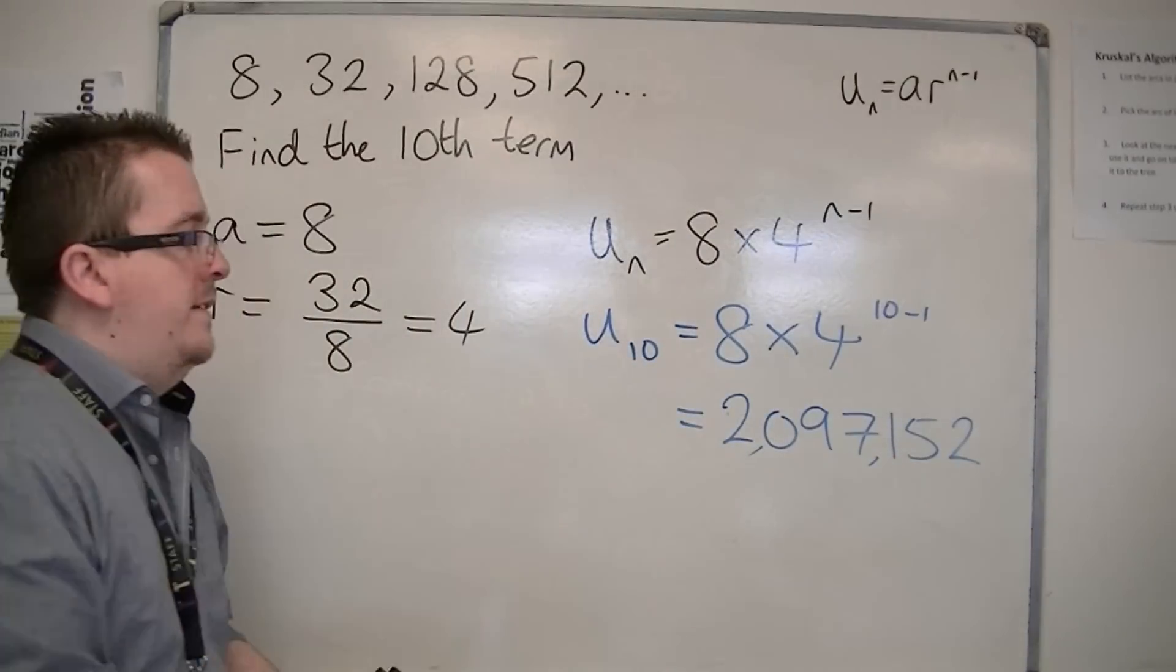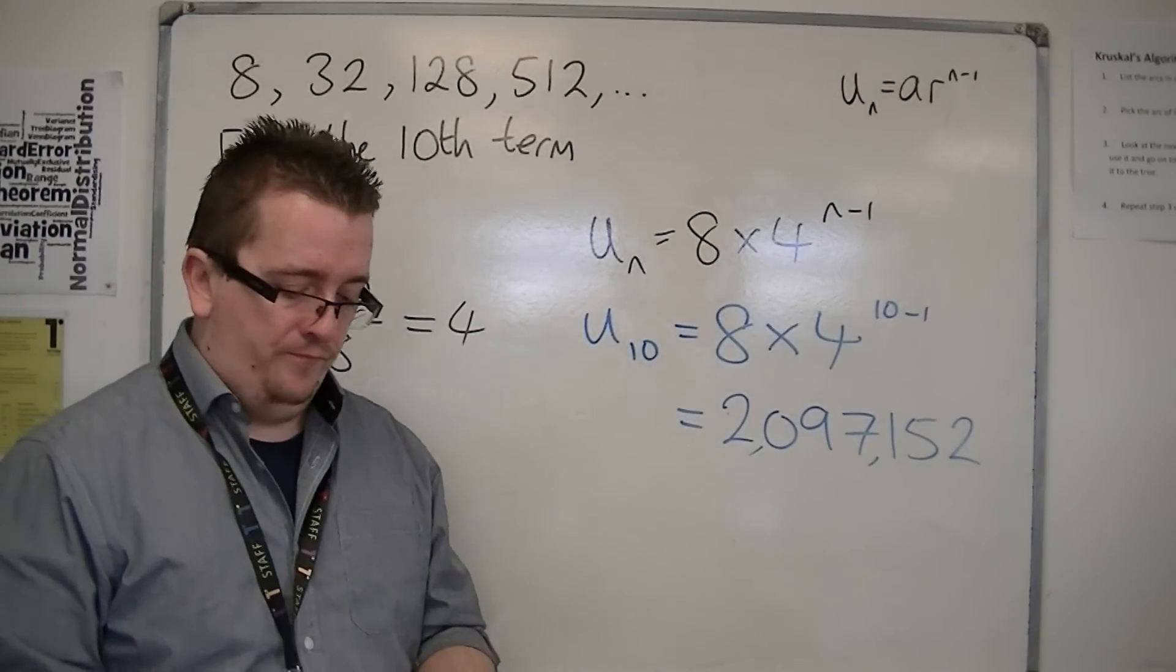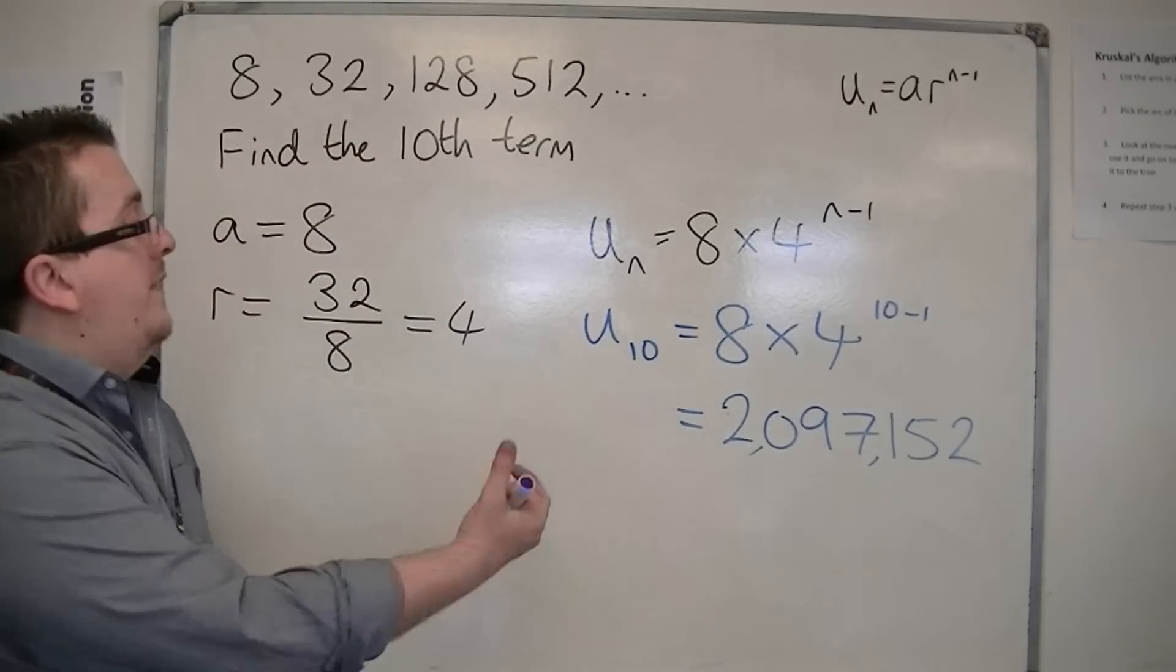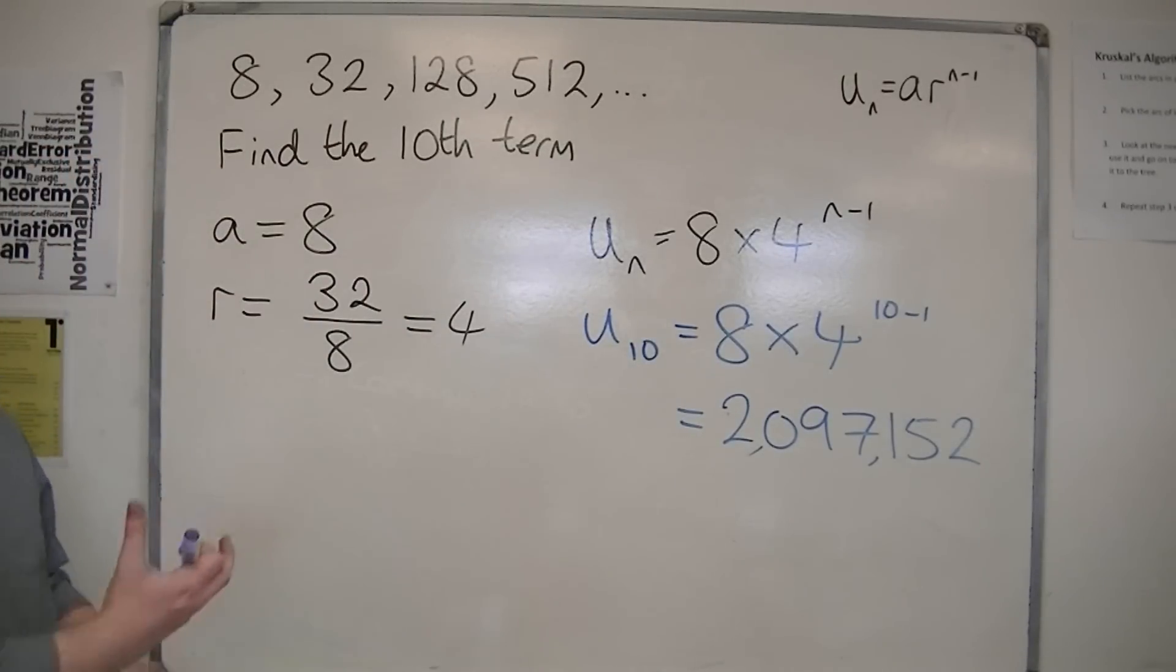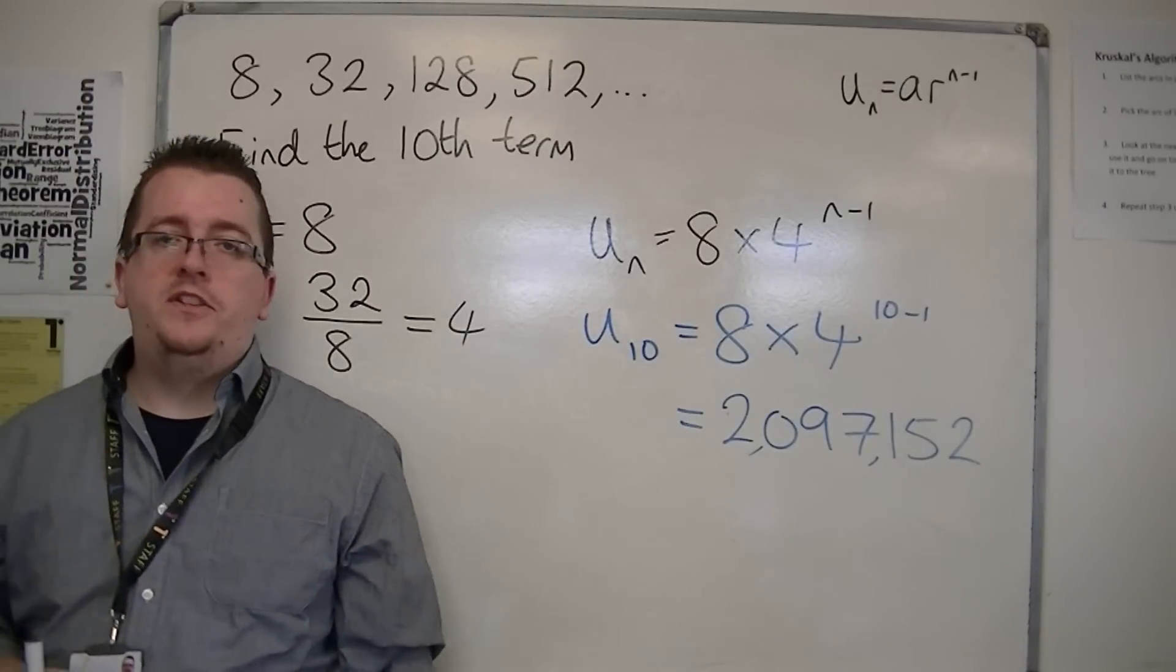So, 2,097,152. And that's how we can find the nth term for a sequence, and then use it to find a particular term in the sequence.